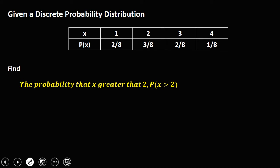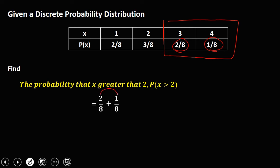For the probability that X is greater than 2: values greater than 2 are X=3 and X=4. Adding the probabilities: 2 over 8 plus 1 over 8. Adding the numerators, 2 plus 1 is 3 over 8. So this is the probability that X is greater than 2.